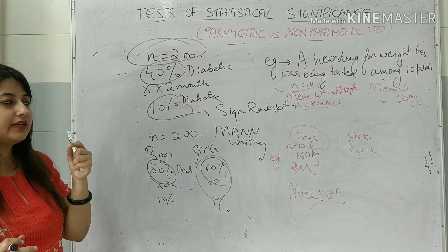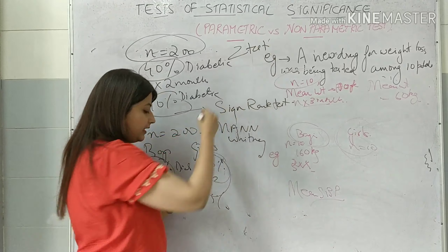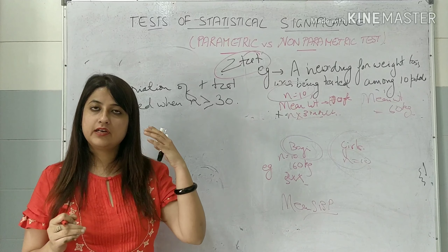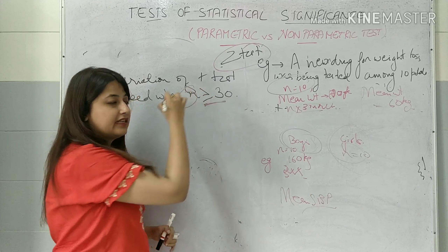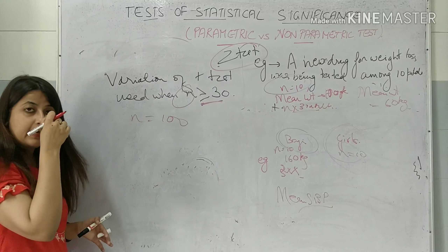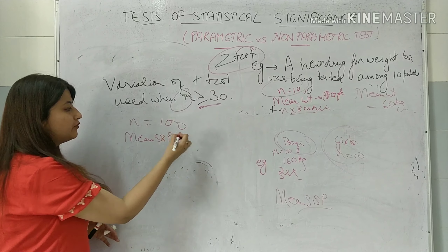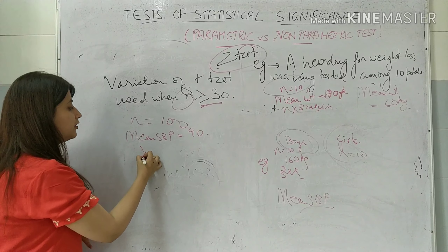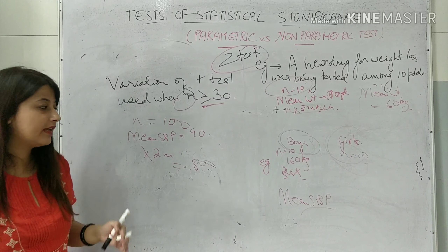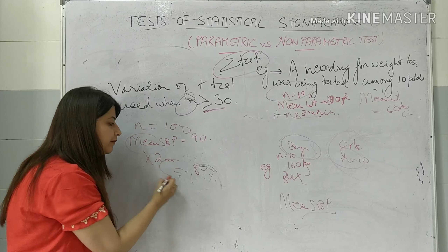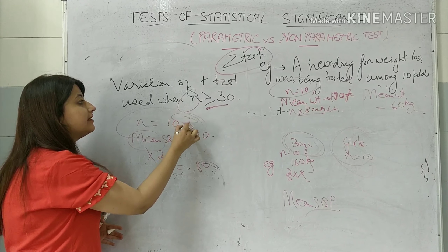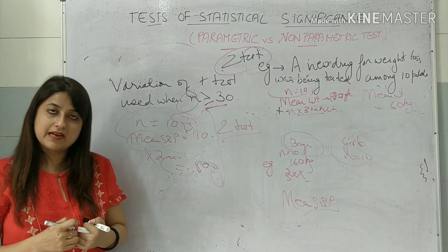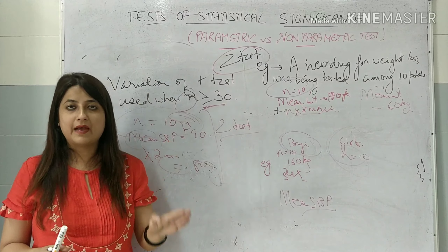One small variation I would like to tell you about is the Z-test. It is nothing but a variation of the T-test. It is used for normally distributed, quantitative data only. When is it used? When the sample size is more than or equal to 30. For example: suppose N=100, mean systolic BP is 90. I give a drug for two months and the mean systolic BP becomes 80. Since we are talking about means, it is a parametric test — but since the sample size is 100, which is ≥30, we will use a Z-test. Z-test is a parametric test.